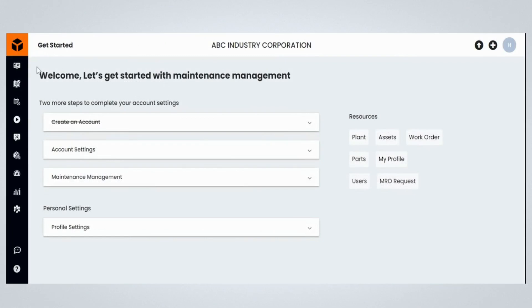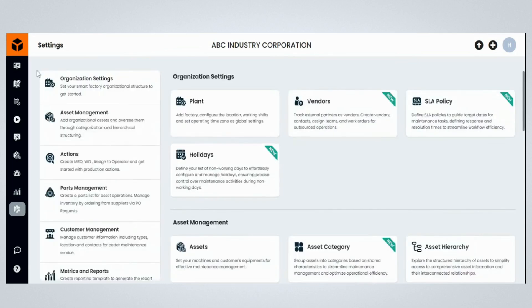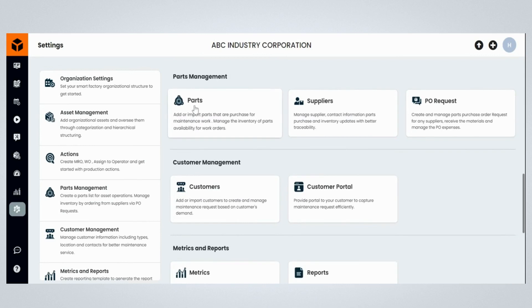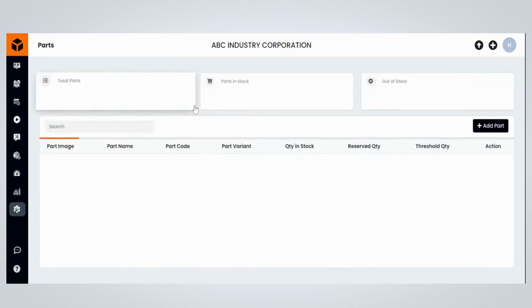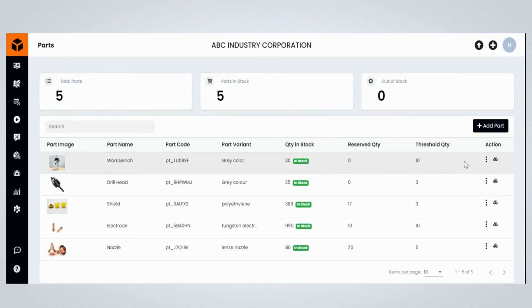Click on the Settings menu item to navigate to the Settings page. Once on the Settings page, click Parts Management in the navigation bar and click on the Parts section. You will be navigated to the Parts module to view all currently registered parts. Select the part you want to associate with a supplier.